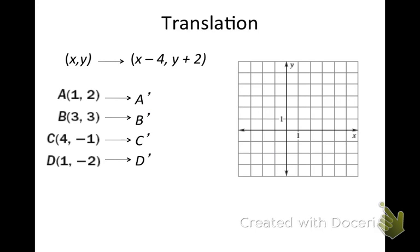If I have coordinate notation, the first thing I'm going to do if it's not already graphed for me is I'm going to graph my original or my pre-image. And then remember, to get my image, I have to, in this particular case, subtract 4 from each x value and add 2 to each y value. So if I did that to my A to get A prime, I would get negative 3, 4.